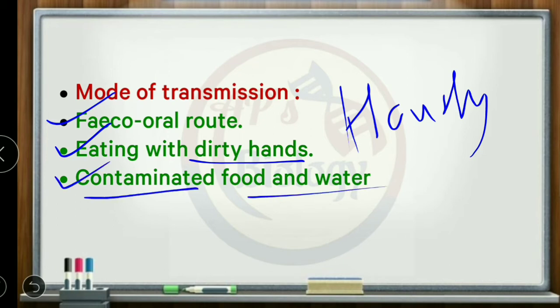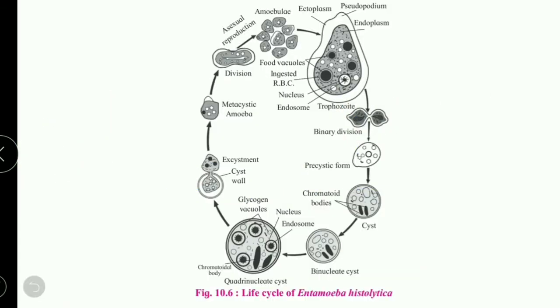Regarding the life cycle, it is a single life cycle based on the diagram. The organism undergoes binary fission. The forms include the trophozoite form, pre-cystic form, and cystic form.